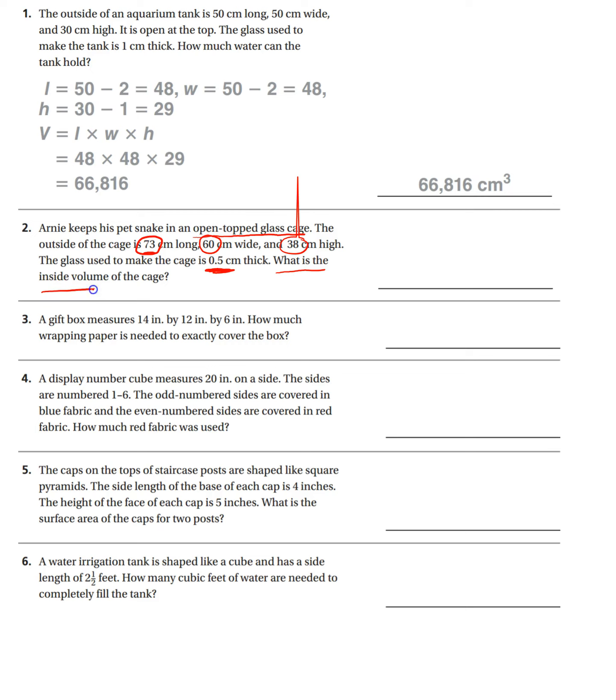What is the inside volume of the cage? So for the sides we need to take one centimeter off because both sides will have half a centimeter, half and half gives you one hole. So we need to do 72, and then volume is area equals length times width times height. So 72 times, and then we need to take another one off of the 60, 59, and then times, and we only need to take a half off of the height because remember there's no top to it. So 37.5. Work that out and you'll have your answer.